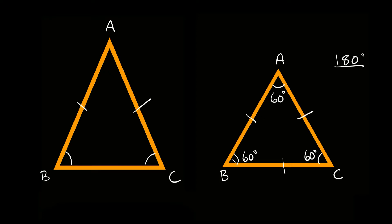So in an equilateral triangle where all the sides and all the angles are the same, the angles are always going to be 60-60-60. Now that we've covered these fundamentals, let's go over just a few examples so we can tie it all together.